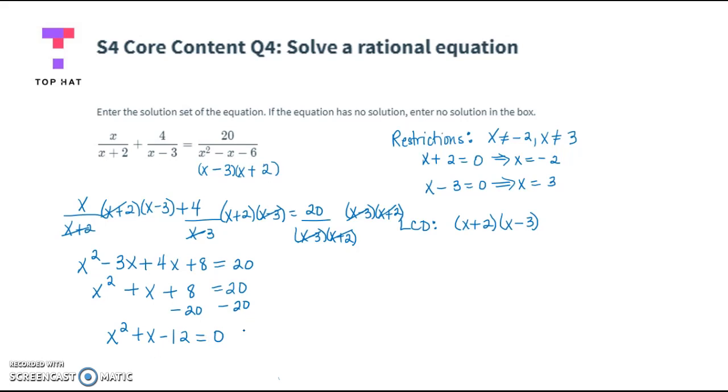Now we factor. x squared factors as x times x. The factors of 12 whose difference is 1 would be 3 and 4. We need different signs with the larger factor being positive. So we have a plus 4 and minus on the 3.